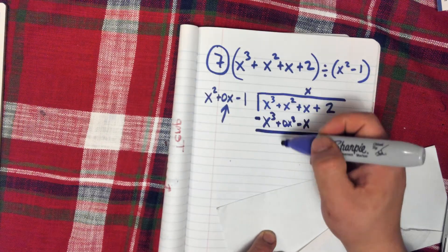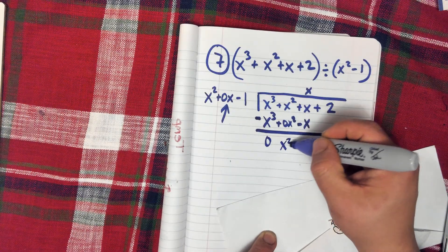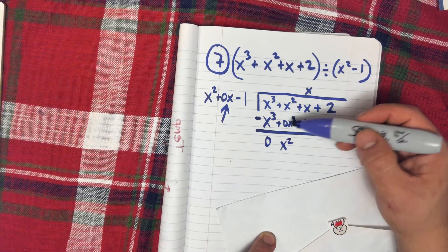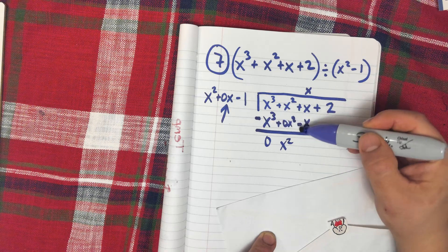x cubed minus x cubed is 0. x squared minus 0x squared is 0. x minus negative x,